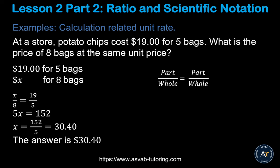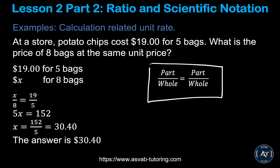At a store, potato chips cost $19 for five bags. What is the price of eight bags at the same unit price? Use the part over whole formula. You can write: x over 8 equals 19 over 5 — with the dollar amount on top and the number of bags on the bottom. Make sure you are consistent; if you mix up the arrangement, you will get the wrong answer.